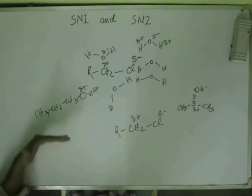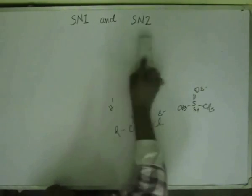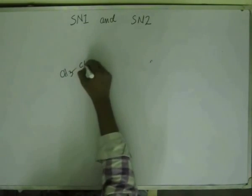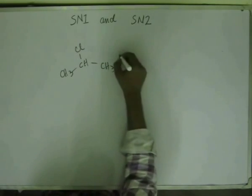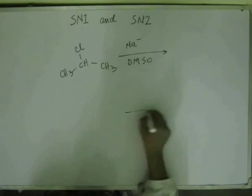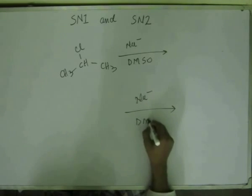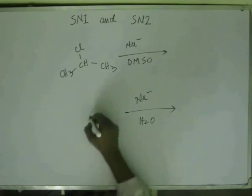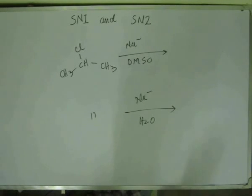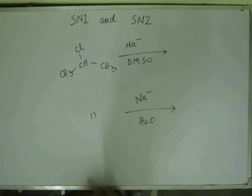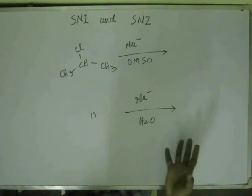Given a secondary substrate, if we are asked to compare the rate of SN1 reaction with a nucleophile in DMSO versus the same nucleophile in water, the rate of SN1 reaction will of course be more in the more polar solvent. Both DMSO and water are polar, but it will be higher in the case of the polar protic solvent — water. In the case of a non-polar solvent, SN1 will not be possible at all because there will be no attraction by the solvent.